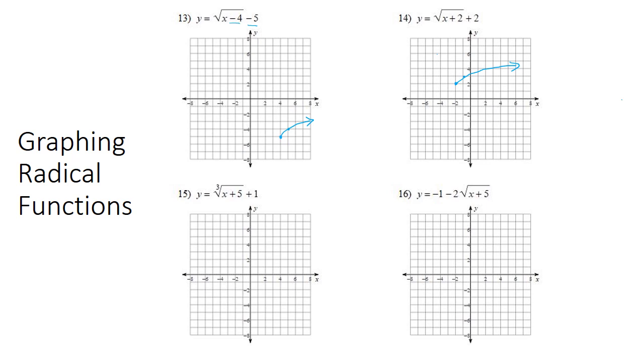Looking at number 15, the first thing is, it is a cube root and not a square root, so it's going to be a little different. So the plus 1 on the end makes it go up 1 from the origin, and the plus 5 makes it go to the left from the origin. So we're going to go up 1 and to the left 5. That's going to be our starting point.